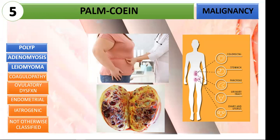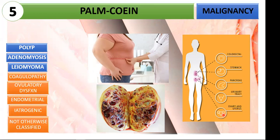Next is AUB-M: malignancy. We previously discussed risk factors for endometrial carcinoma, with the common denominator being unopposed estrogen stimulation. Obesity has increased estrone levels due to adipose tissue conversion by aromatase. A granulosa cell tumor is an ovarian tumor that is estrogen-producing. Lastly, Lynch syndrome — hereditary non-polyposis colorectal cancer — is related to various malignancies of different organ systems, including the uterus. There is a 40 to 50% risk for developing endometrial cancer when diagnosed with Lynch syndrome.